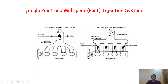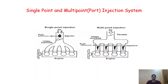This covers single point and multipoint, also called port injection systems. Before understanding these two types, we must have knowledge about the injection system and why it is used. The carburetor is a device used to supply the air-fuel mixture to the engine cylinder, but due to its limitations, carburetor use is now limited to two-wheeler engines. Nowadays we do not use carburetors for four-wheeler engines.